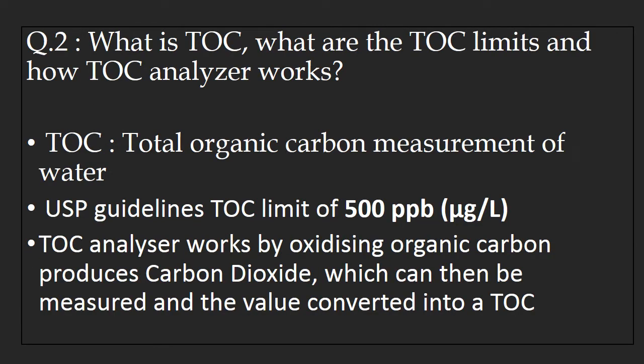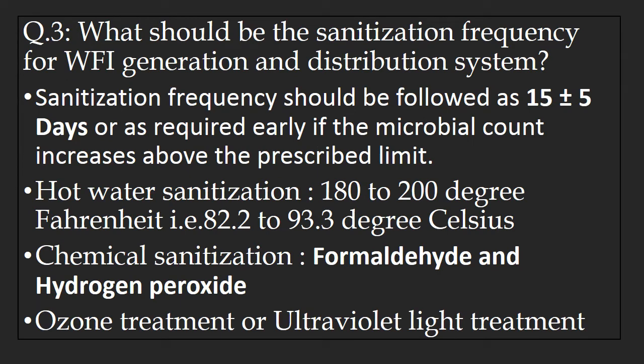Question number 2 is about TOC, that is Total Organic Carbon. The question might be: What is TOC, what are the TOC limits, and how does a TOC analyzer work? TOC is a measurement of total organic carbon in water. USP guidelines set the TOC limit at 500 ppb or microgram per liter. A TOC analyzer works by oxidizing organic carbon to produce carbon dioxide, which is then measured and converted into the TOC value.